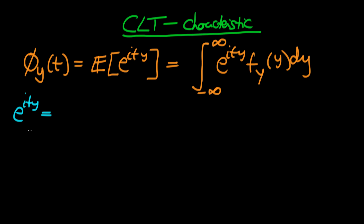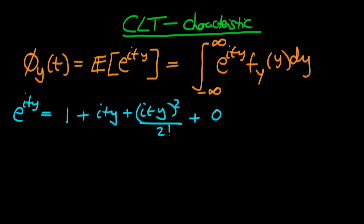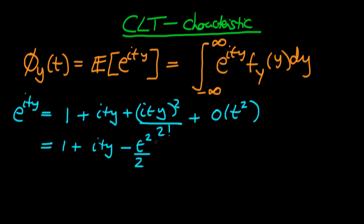We can expand e^(ity) using a Maclaurin series as: 1 plus ity plus (ity)² divided by 2 factorial, and so on for higher order terms. I'll denote all higher terms as 'stuff of order t²', meaning they tend to zero faster than t² as t goes to zero. So more simply: 1 plus ity minus t²y²/2 plus stuff of order t².